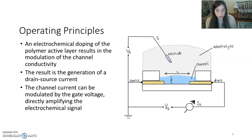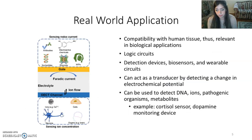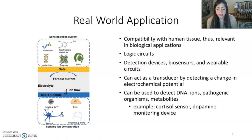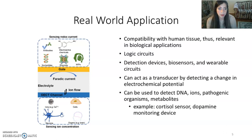The channel current can be modulated by the gate voltage, directly amplifying the electrochemical signal. Here are some real-world applications for OECTs, most of which are biological due to its compatibility with human tissue. It can be used in detection devices, biosensors, wearable circuits, and can also be used to detect DNA, ions, pathogenic organisms, metabolites, and many more.